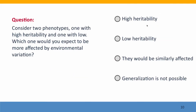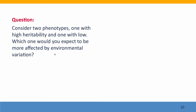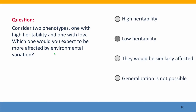Here's another question: consider two phenotypes, one with high heritability and one with low heritability. Which would you expect to be more affected by environmental variation? The answer is that the phenotype with low heritability will be more susceptible to environmental variation, because it's being affected by environmental variation that caused us to assign it low heritability in the first place.